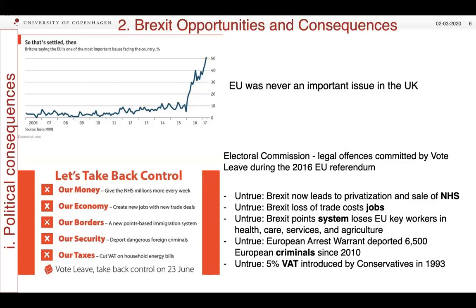The EU has never been that important an issue in the United Kingdom. People often talk about the UK as the awkward partner or Euro-sceptical, when in fact what they mean is anti-European — and these have never been broad descriptions of the UK. When Britons are asked which is one of the most important issues facing the country at elections since 2006, the EU has always been of minor importance. Less than 10% of people, up to the middle of 2015, answered that the EU was important to them. So a very interesting question is: how did the EU become important?